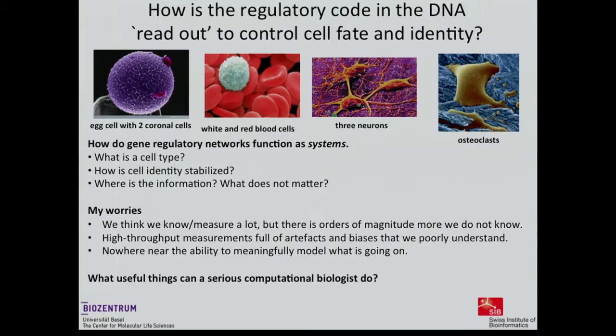The kinds of questions I'm interested in: what is a cell type anyway? Can we rigorously define what a cell type really is, and how is the identity of such a cell type stabilized, given that all the processes involve small molecules and are extremely noisy — when you look at single cells you start realizing how noisy these things are. So where is the information? How does the cell know what type it's supposed to be and stay, and what are the things that matter versus what can we ignore?